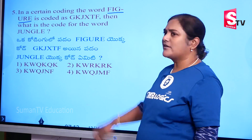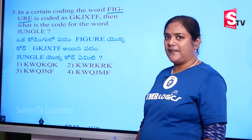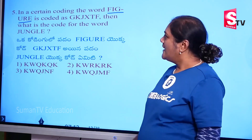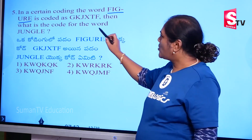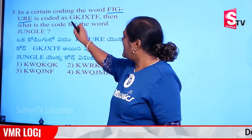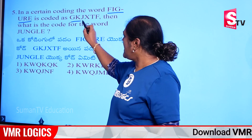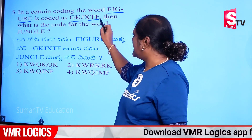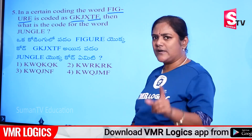Now, next model to the figure. The code is G, K, J, X, T, F.